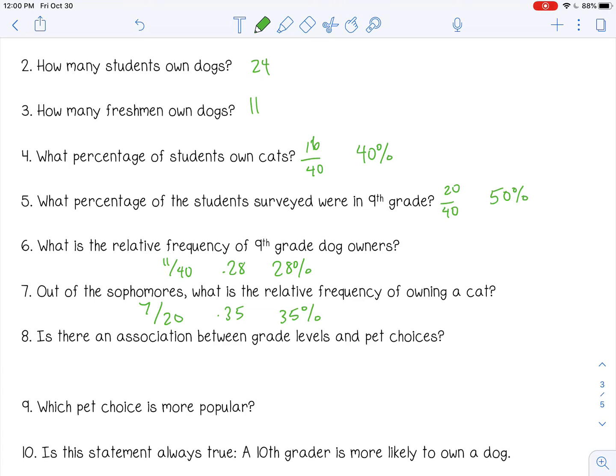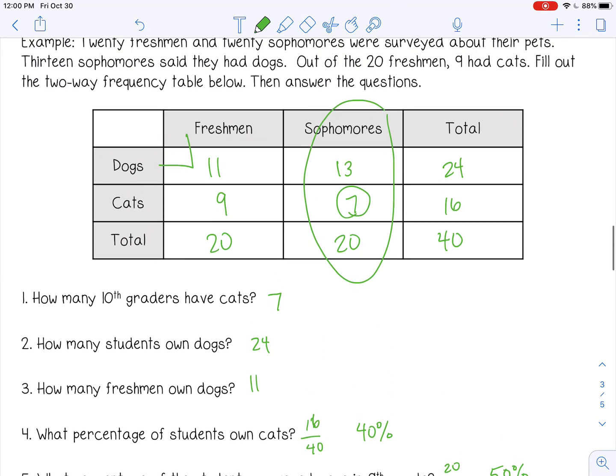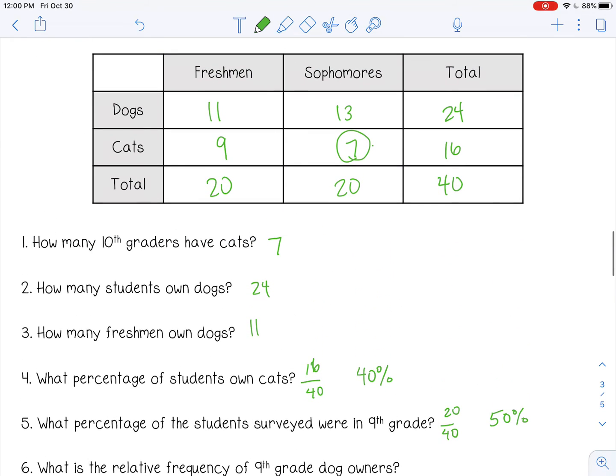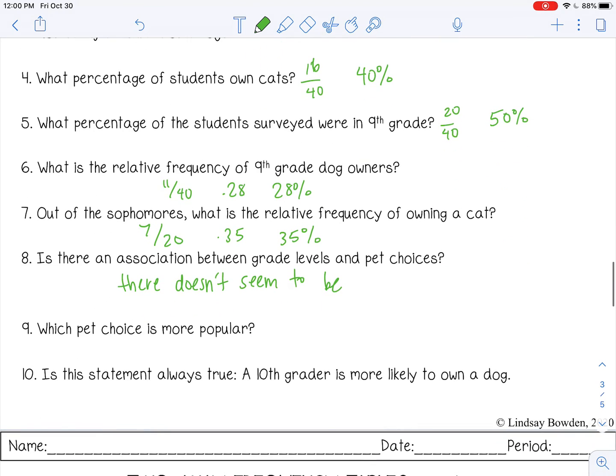Is there an association between grade levels and pet choices? There doesn't seem to be any huge trends. Freshmen are about half and half, 11 like dogs and 9 like cats. Sophomores are pretty close together too, 13 and 7. There doesn't seem like a huge majority, so there doesn't seem to be. Which pet choice is most popular? That would be dogs, 24 like dogs and 16 like cats. Is this statement always true? A 10th grader is more likely to own a dog. Well, at this school and out of these 40 students, yes, but in general, we don't know. There's not enough data to support that, so not necessarily.